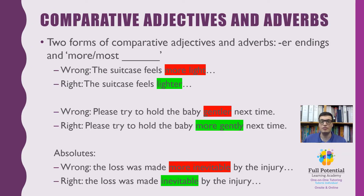Comparative adjectives and adverbs. When giving adjectives and adverbs a comparative form to compare things in a sentence, there are two forms to recognize: there are -er endings, and there is the 'more/most' blank form to consider. We see this in the examples below. For the first example, 'the suitcase was more light' is wrong and must be changed to 'the suitcase was lighter' to have the proper comparative form.